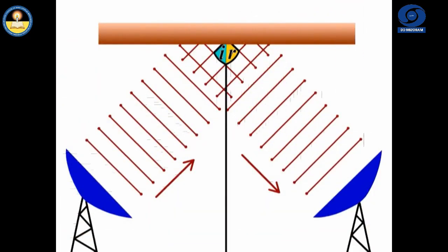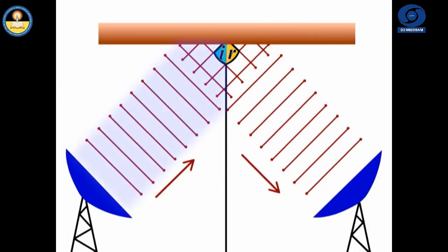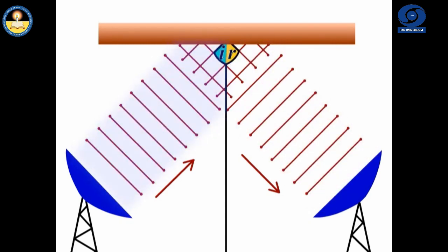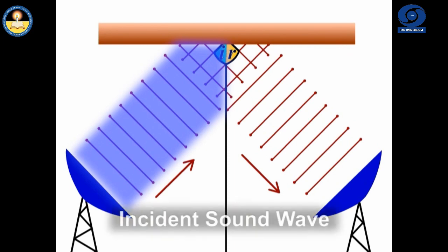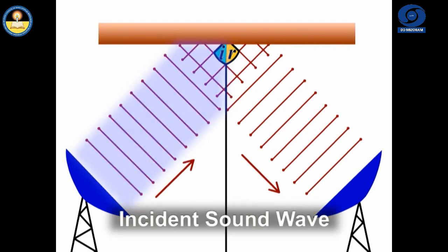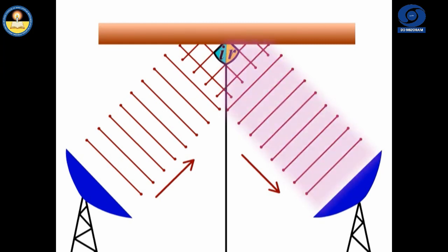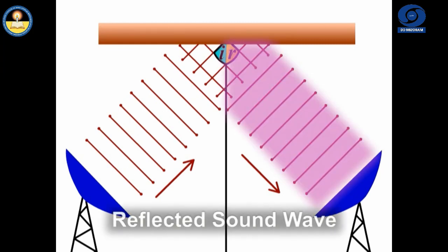The sound wave that travels towards the reflecting surface is called the incident sound wave. The sound wave bouncing back from the reflecting surface is called reflected sound wave.